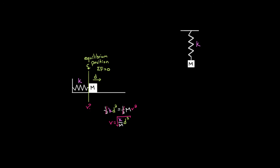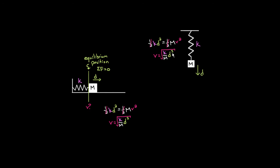Now what if it was a vertical spring with a mass hanging on it? If we pull it down a distance d from where the mass hangs at rest, will it also be going root k over m times d squared when it reaches equilibrium? Or will it be different because it's hanging vertically? It turns out the answer is the same — but that should be surprising, because now you don't just have a spring force, you've got a gravitational force, changes in gravitational potential energy. So why don't we have to account for gravitational PE in our energy conservation equation?